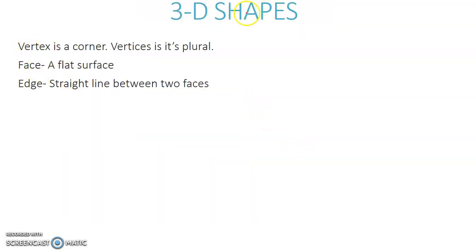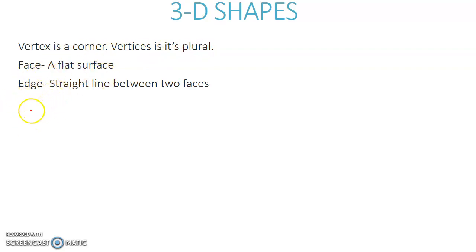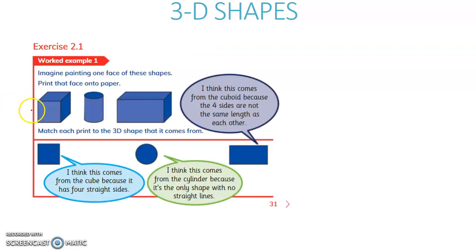Now, moving forward — about 3D shapes. A vertex is a corner; vertices is its plural. A face is a flat surface. An edge is a straight line between two faces.